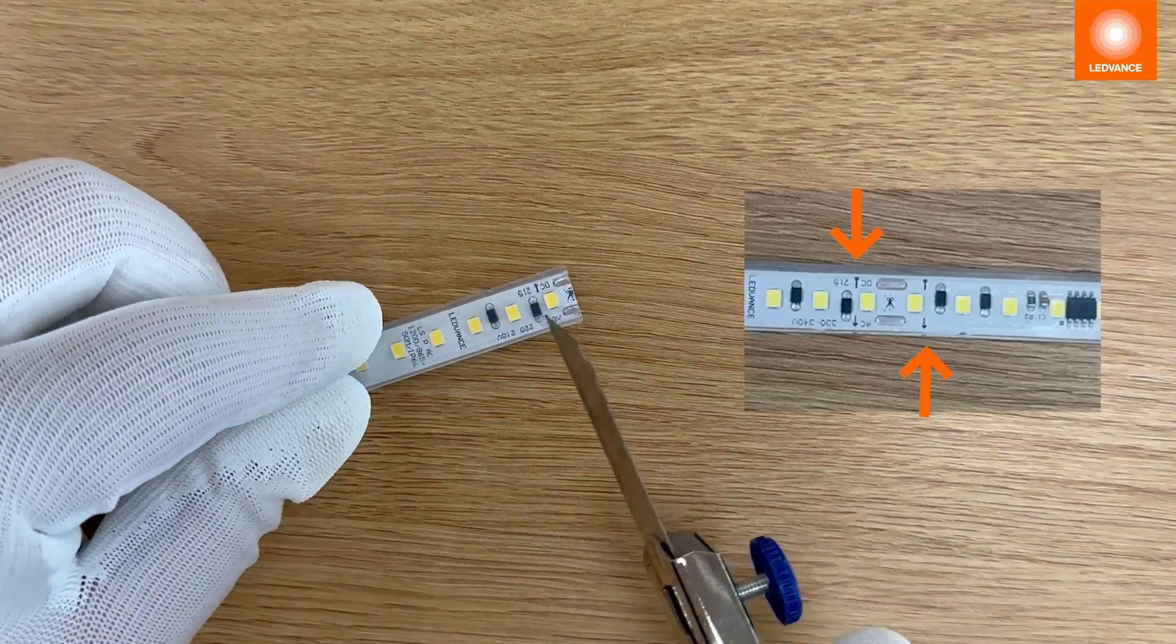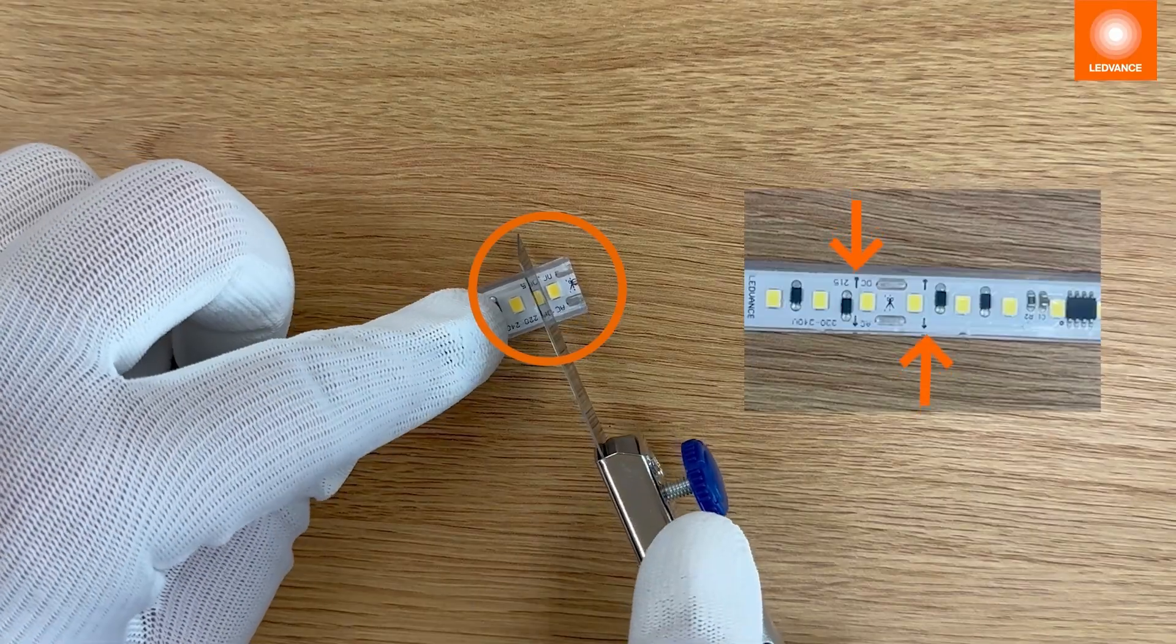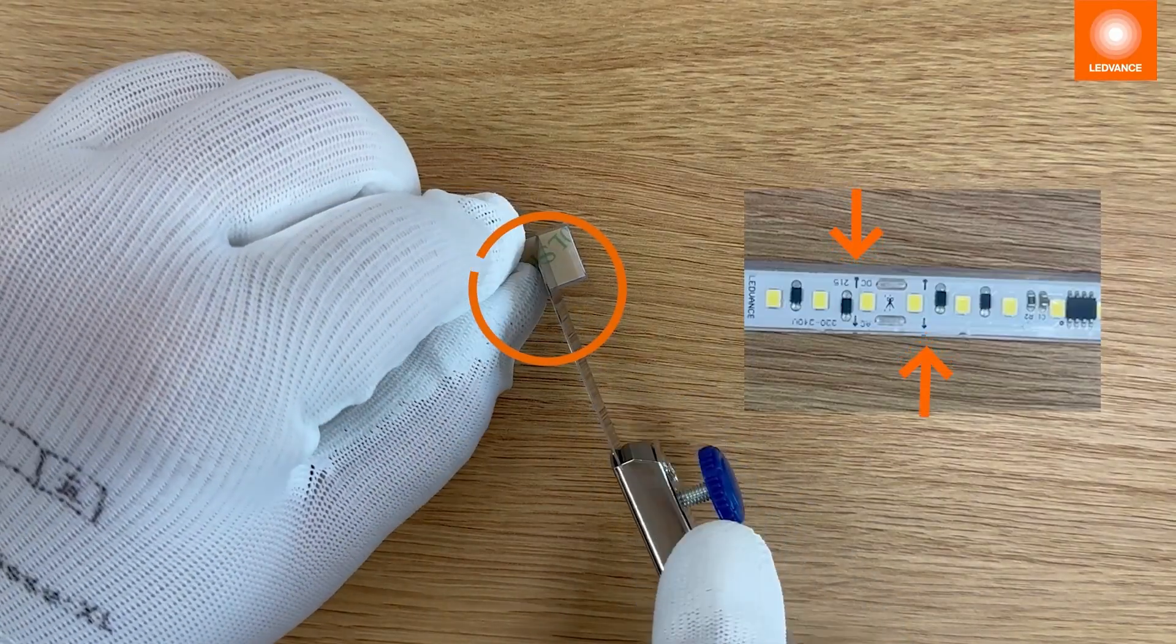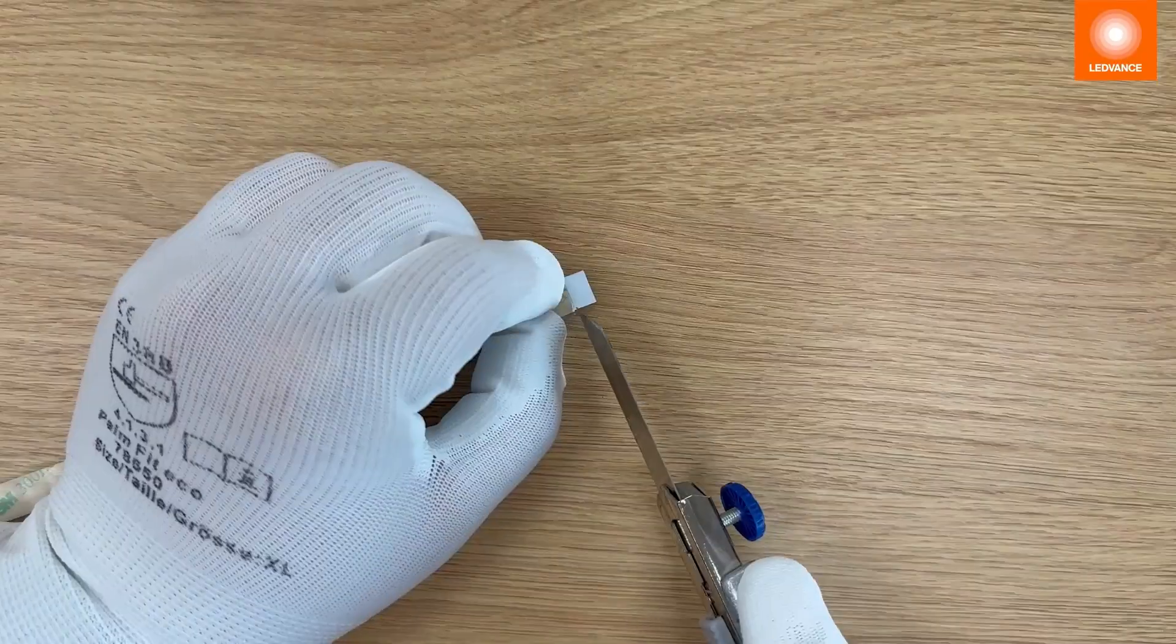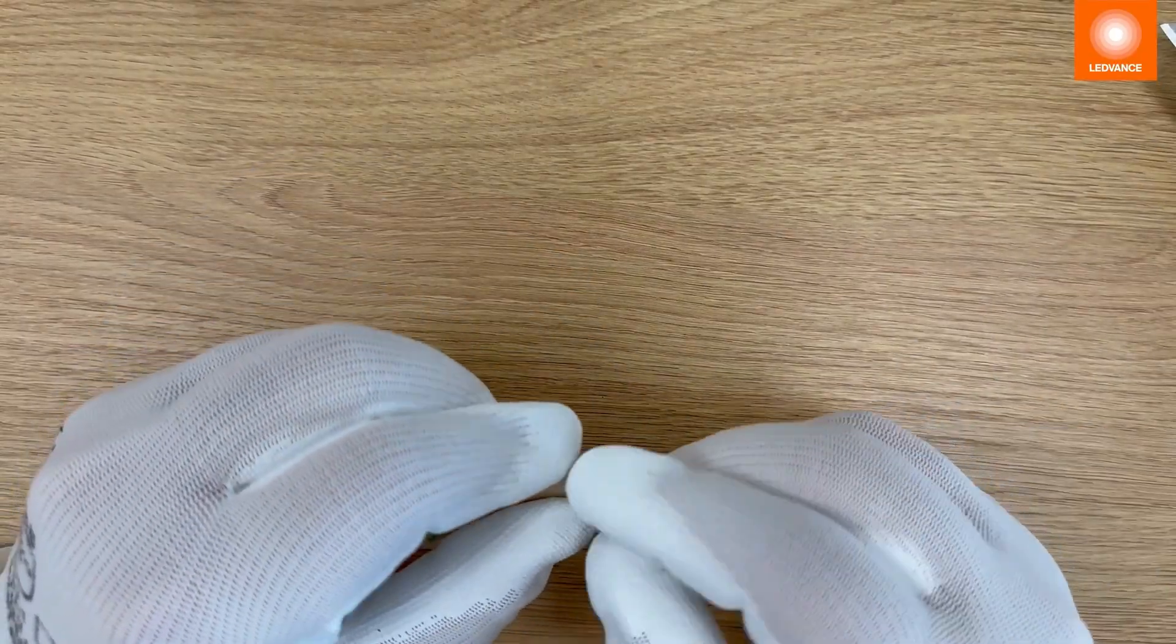To fit the connector the silicone must be removed. The arrows will guide you where to start cutting. After removing the silicone, remove the white plastic supporting tape.